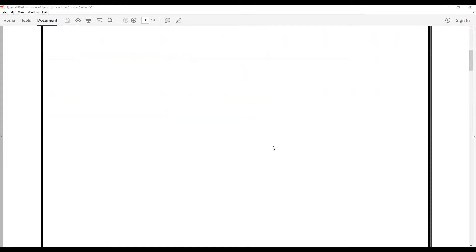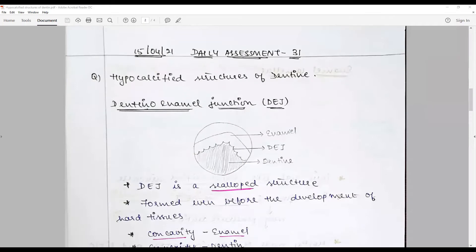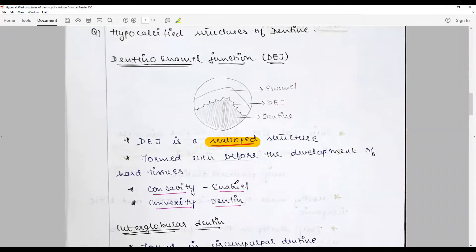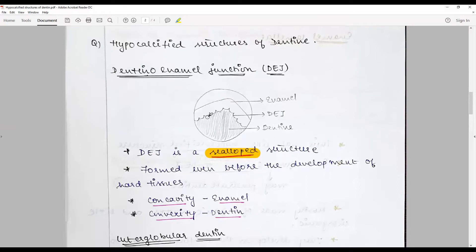Jumping into the answer: dentin enamel junction is a scalloped structure formed before the development of both hard tissues. The scalloped structure has concavity facing the enamel and convexity facing the dentin. It is responsible for the mechanical retention and increases the surface area.